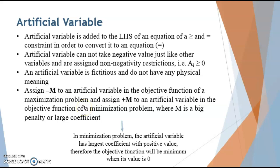Whenever you have to choose which variable is the largest one, always assume M to be the largest value among all the other variables. In minimization problems, the artificial variables have the largest coefficient with a positive value, therefore your objective function will be minimum when its value is 0. If it is not 0, it means your objective function cannot be minimum.